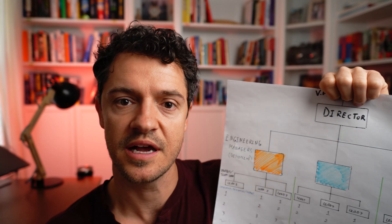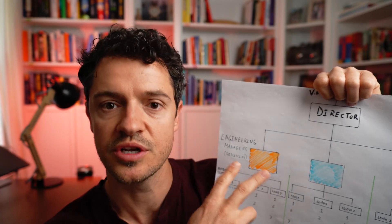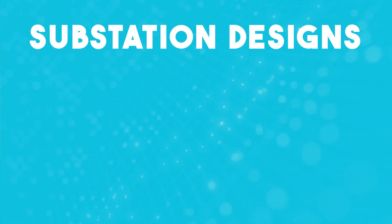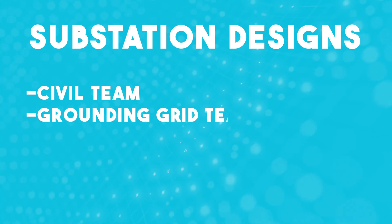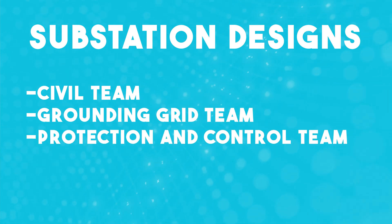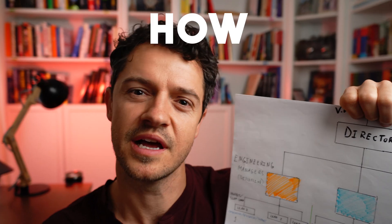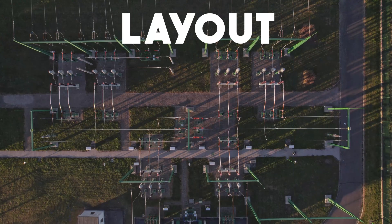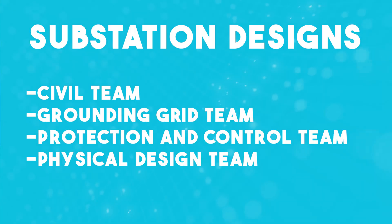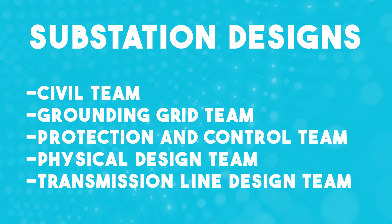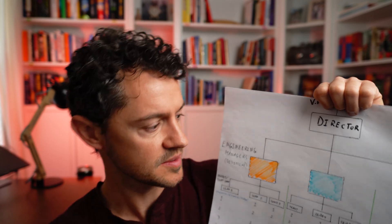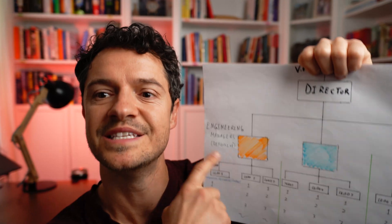In my case, I oversee a specific discipline for the client we work with: substation design, specifically protection and controls. In substation design, you have multiple disciplines — to build a substation, you need a civil team, a grounding grid team, a protection and controls team for all the electrical connections and how the substation functions, a physical design team for the actual layout, a transmission line design team, relay settings, standards, and so on and so forth.